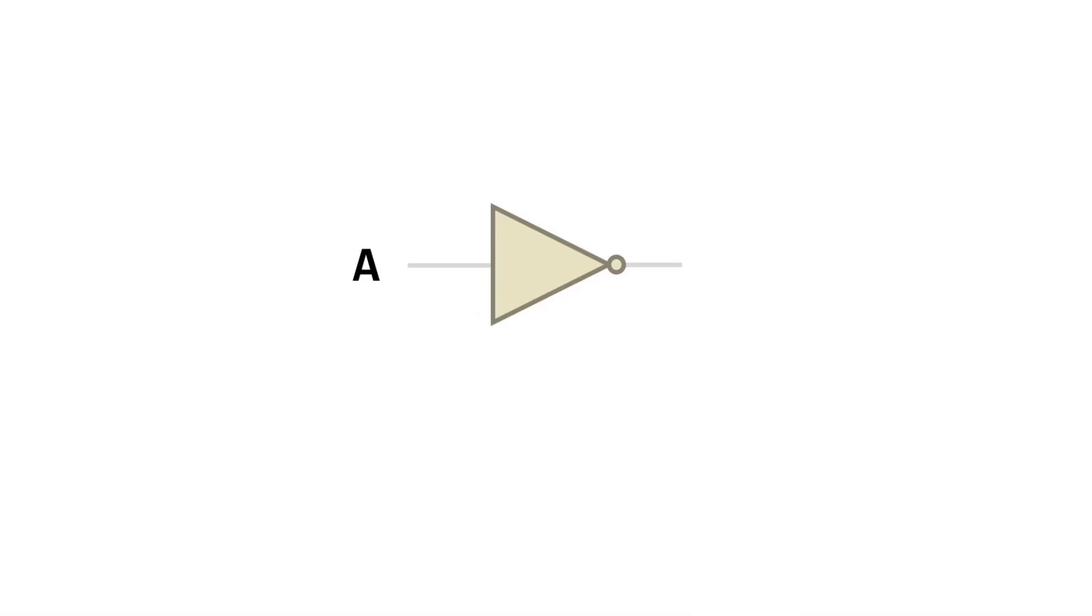The first gate we'll take a look at is the NOT gate. And this is what it looks like in symbolic form. It's a triangle with a little dot at the end. How charming. It only has the one input, identified here as A, which could be either a 1 or a 0.